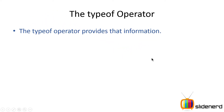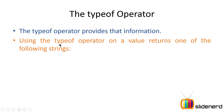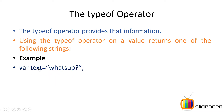Let's begin with the typeof operator — this is not a data type, it's an operator. The typeof operator provides information about the type of data contained inside a variable. In other words, using the typeof operator on a value returns one of the following strings. Let's take a look at an example where we have a variable called text.